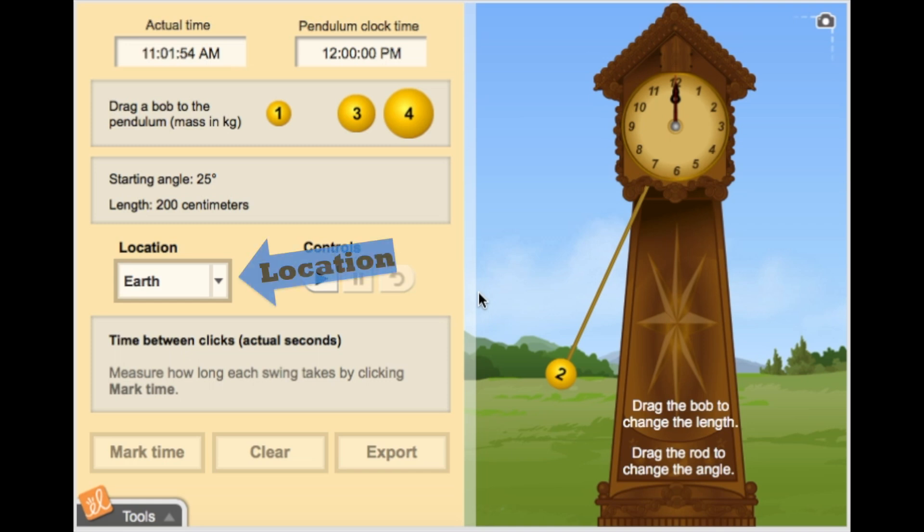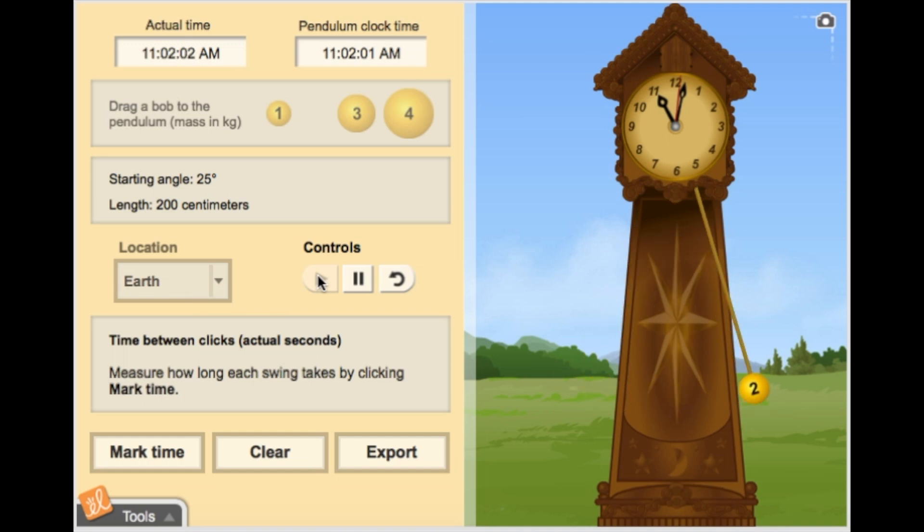Let's start with our pendulum clock on Earth at a 25-degree angle and a 200-centimeter pendulum length. Now, click play. What do you notice? Do you hear the tick, tock?